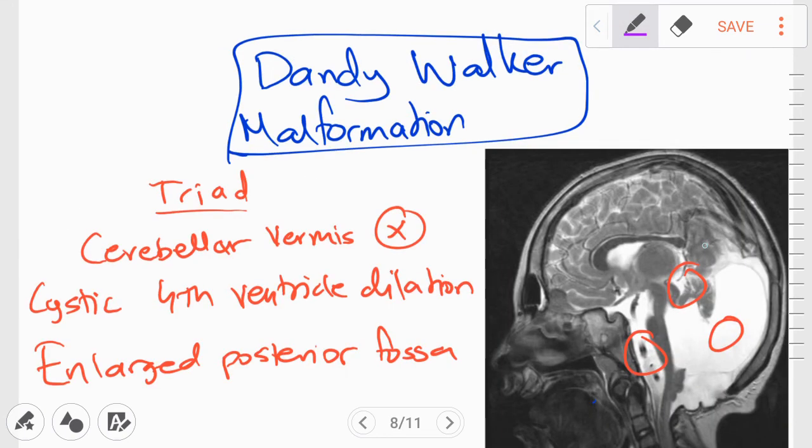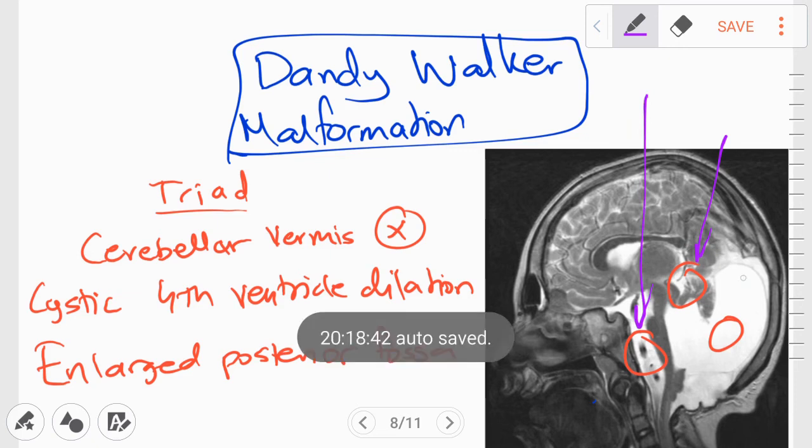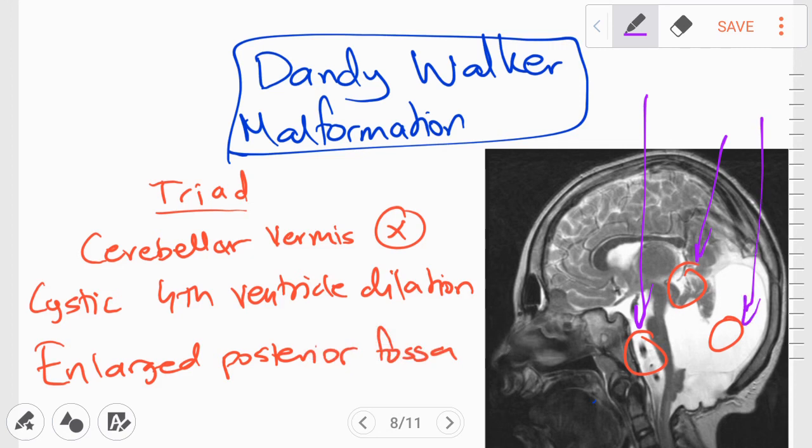The next disorder in our list is called Dandy-Walker malformation. The Dandy-Walker malformation is characterized by a triad of findings. Firstly, the absence of cerebellar vermis. You can see it right here. The second thing we can see is a cystic fourth ventricle dilation, which we can see in this diagram here. And finally, we can also see an enlarged posterior fossa, which can be seen right here. So when we find these three together, we can classify that disorder as Dandy-Walker malformation.